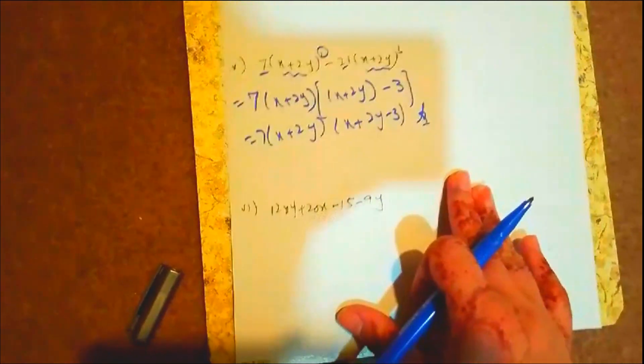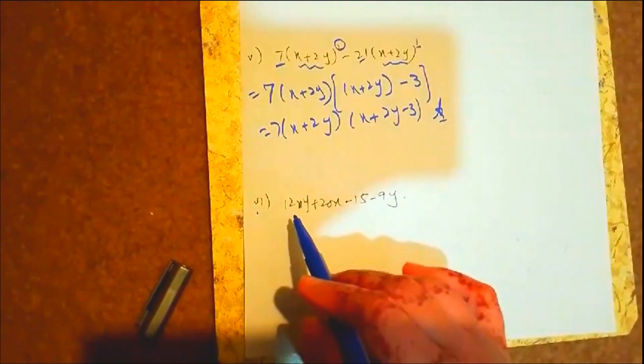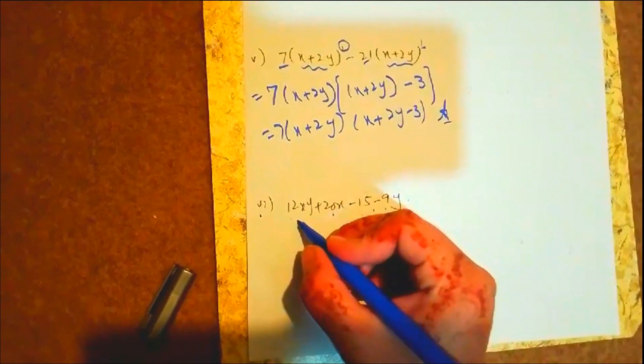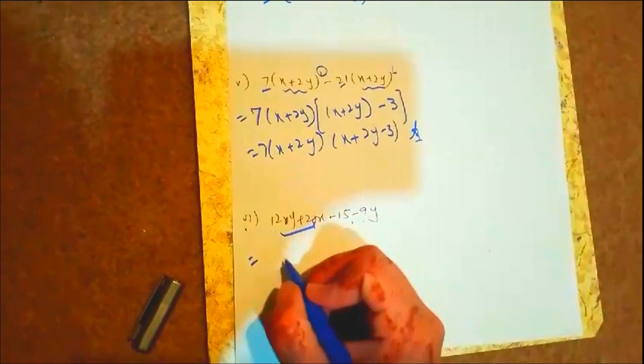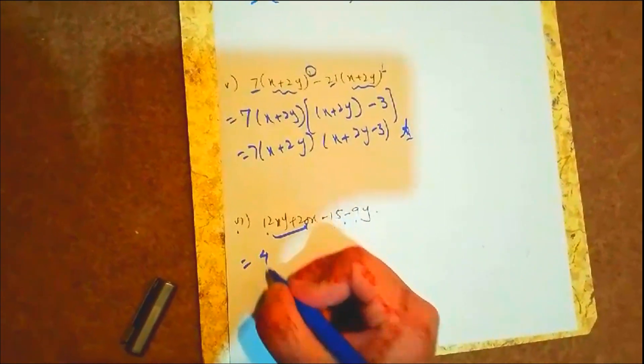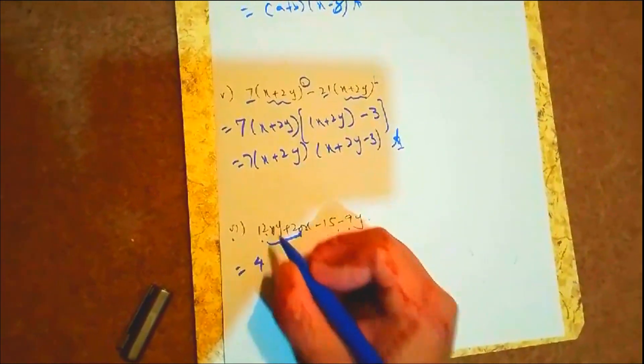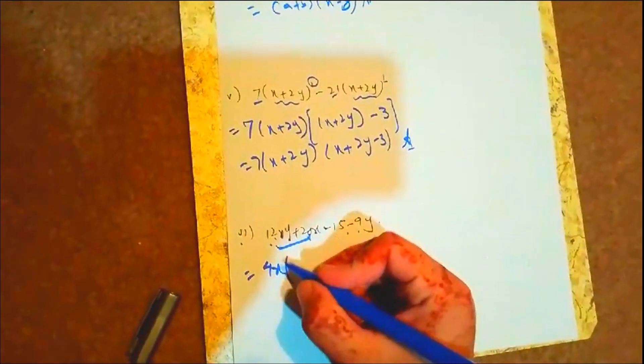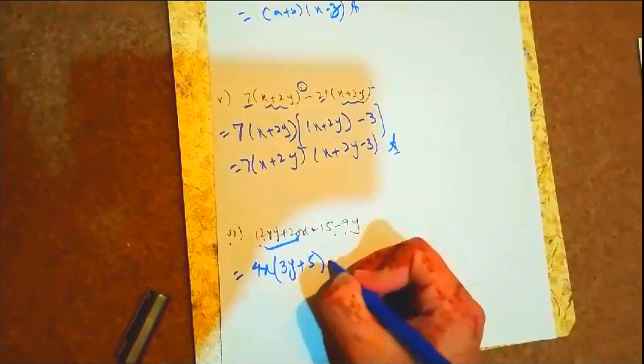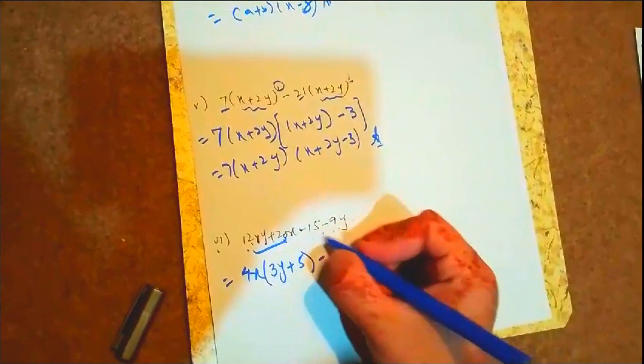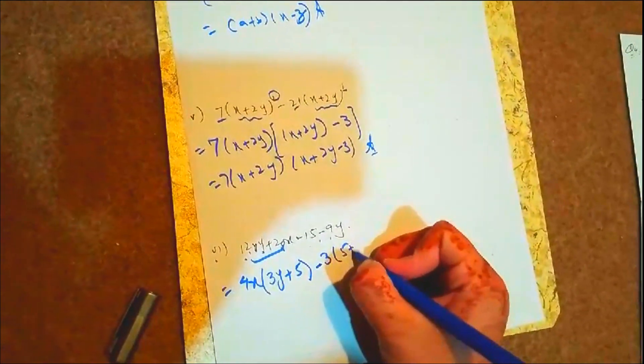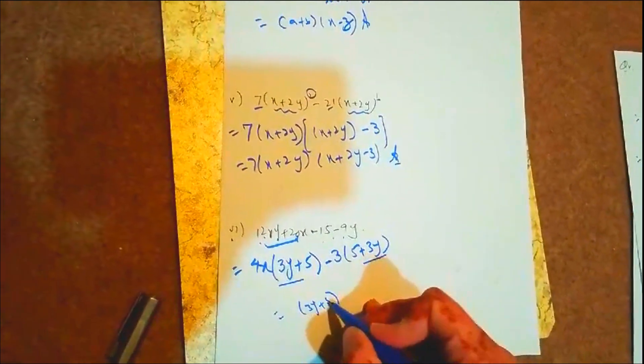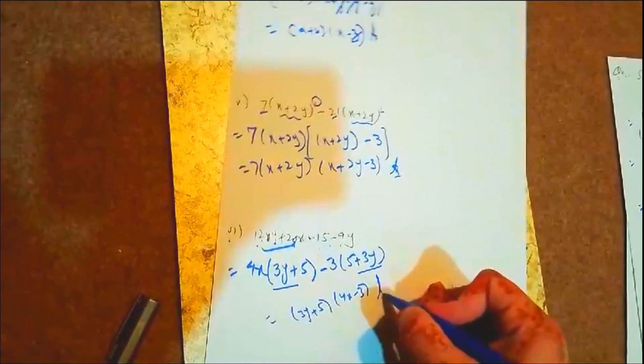Last part: 12xy + 20x - 15x - 9y. Here 4 is common in first terms. 4x(3y + 5) - 3y(5 + 3y). We can factor: (4x - 3y)(3y + 5). So this is the answer.